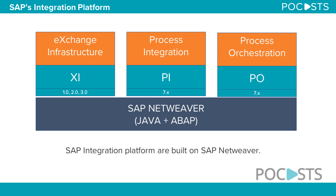Let's try to understand what SAP Netweaver is. SAP Netweaver is a technology platform — a collection of software, frameworks, and servers. It is a complete ecosystem to develop, deploy, and run applications. SAP Netweaver has many different components, and one of those components is PI, PO, or XI. SAP XI, PI, or PO are part of the SAP Netweaver product family, meaning they use its underlying server to run.